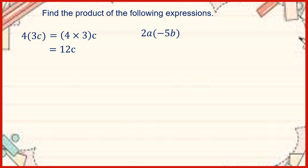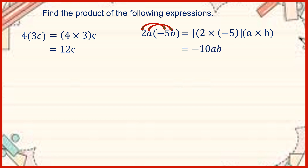Now let us have 2a times negative 5b. We are going to multiply 2 times negative 5, and then a times b. 2 times negative 5 is equal to negative 10. So therefore, the answer is negative 10ab.